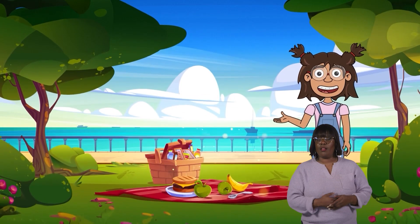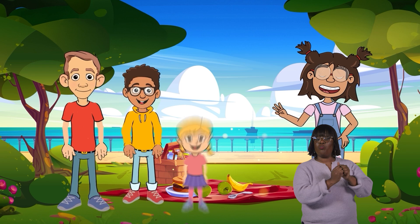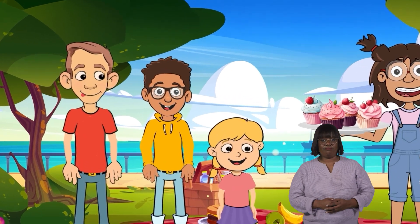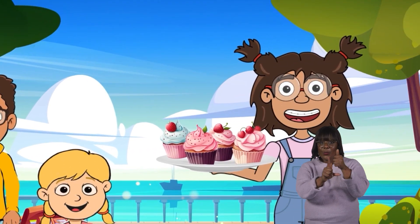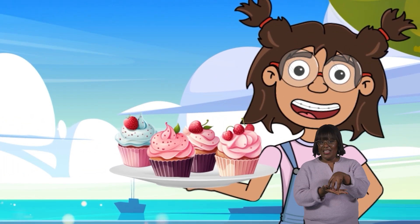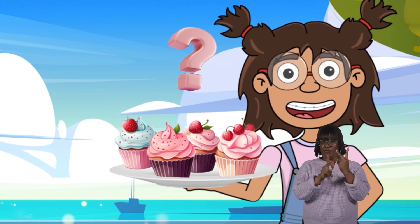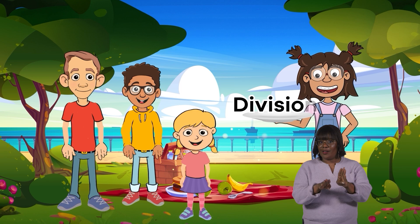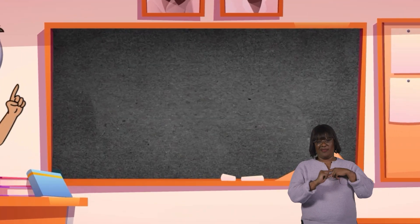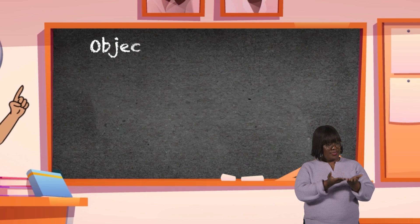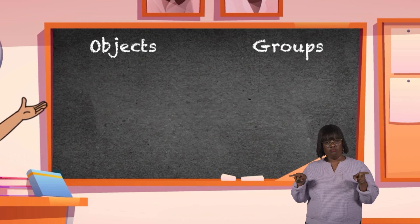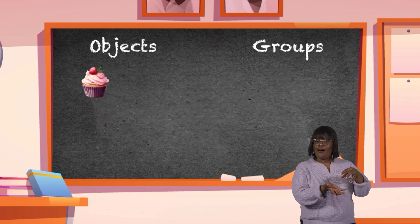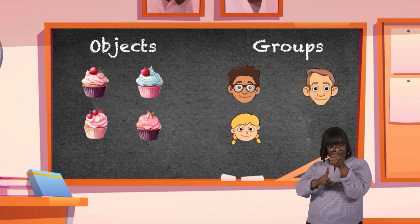Here's an example. Let's say you are hanging out with your three best friends, and you have four cupcakes. You want everybody, including yourself, to get the same amount of cupcakes. So how do you figure out how many cupcakes each person gets? By division, of course. First, we have to figure out what the number of objects and groups are. What do you think? The objects are the cupcakes, and the groups are you and your friends.